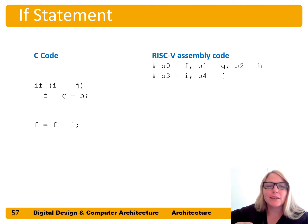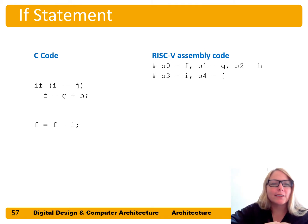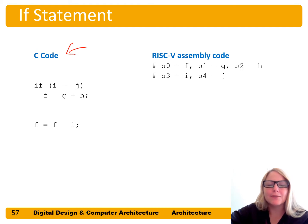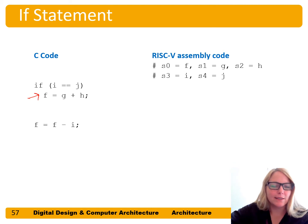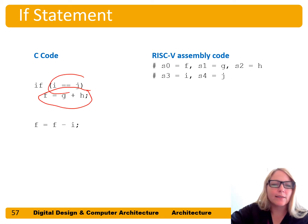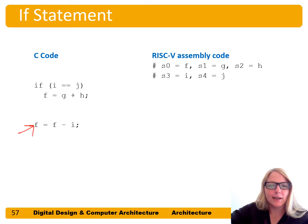Here's the if-statement in C code, very similar if not exactly the same in other high-level languages. If i equals equals j, then f equals g plus h. This line of code will only execute if the condition is true, and then it continues on to the next statement.